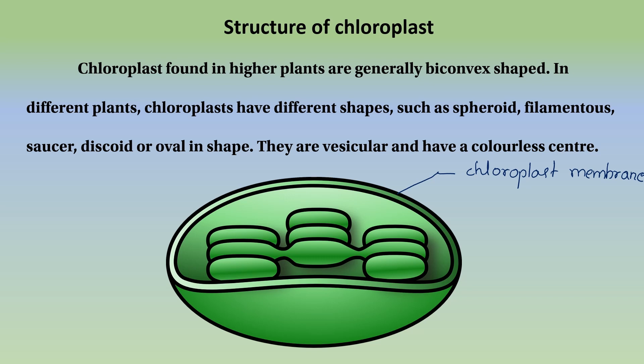Chloroplasts are found in higher plants and are generally in a converged shape. You can see different shapes in different plans, such as spiral, filament, saucer, discoid, or ovoid shape.